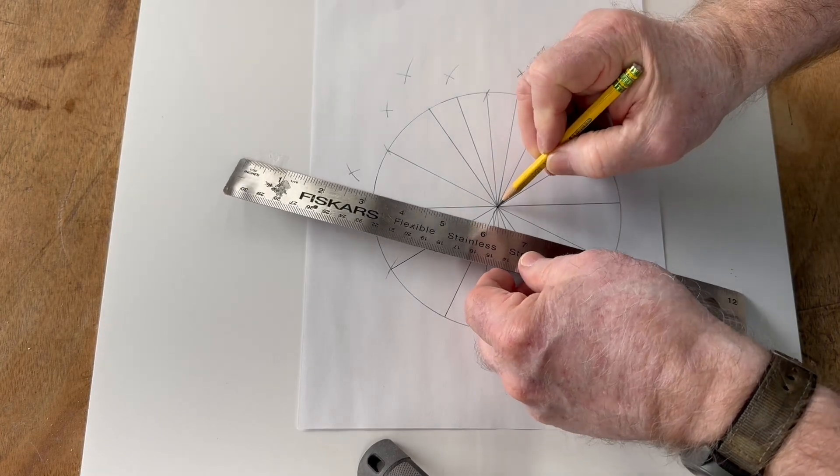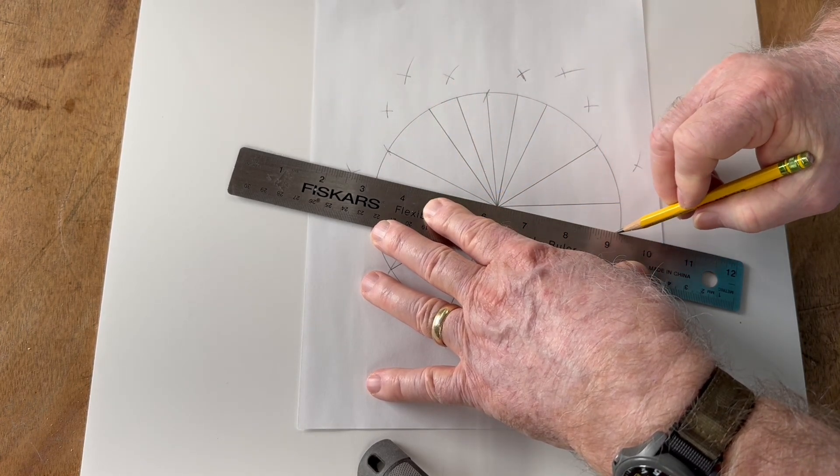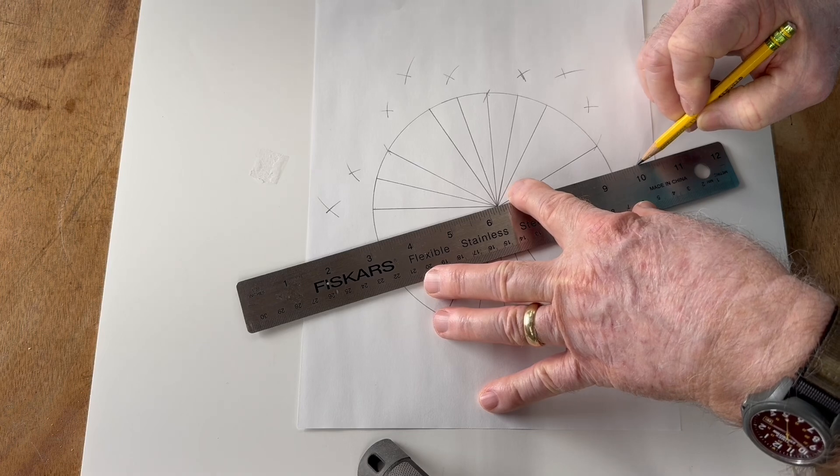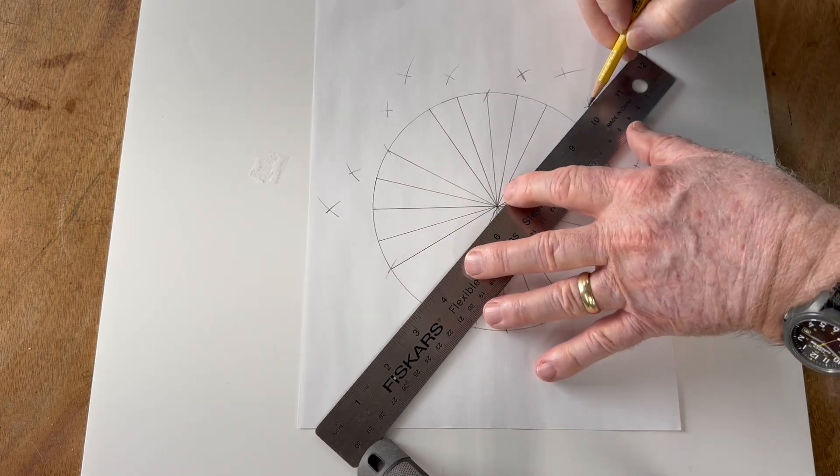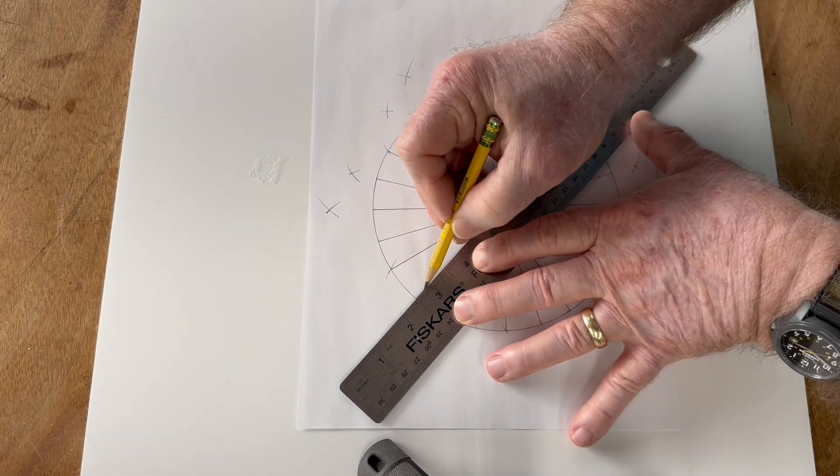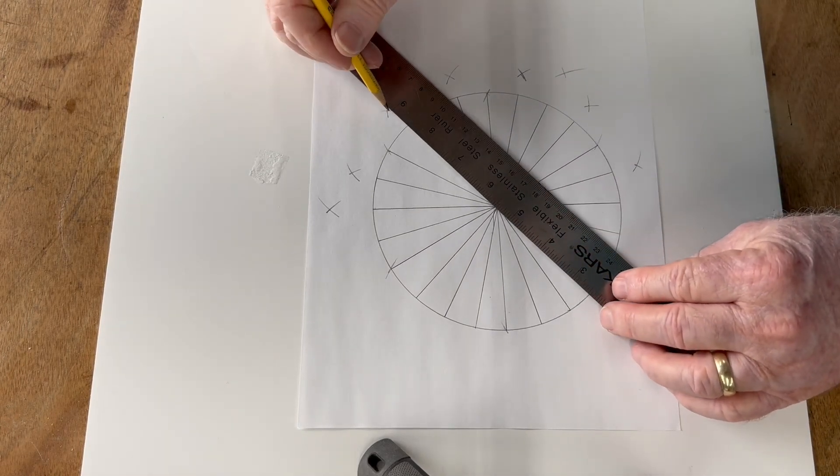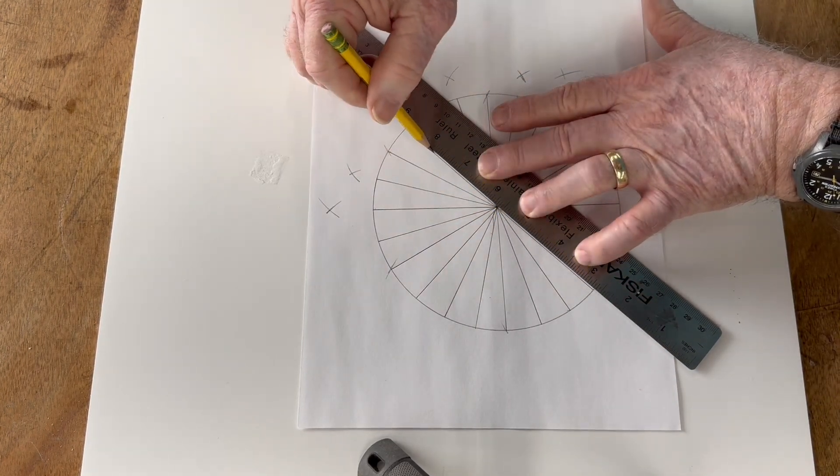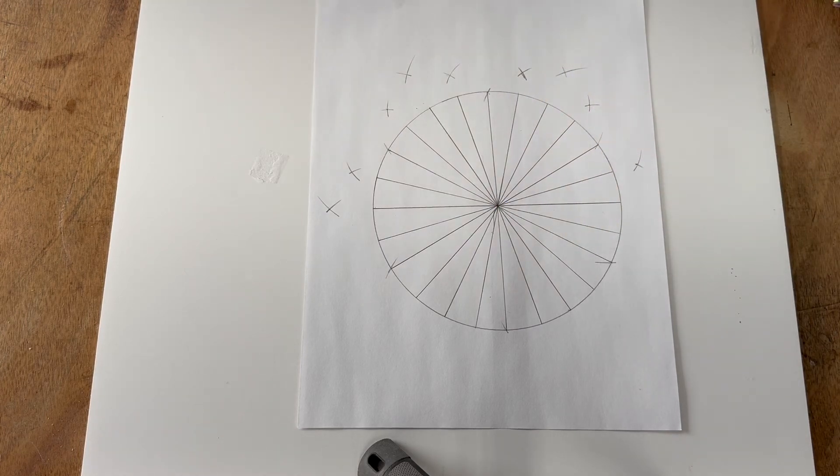Now all we need to do is go from the center point to the arc that we had made. That bisects that section and will create my 24 points. Put my pencil down right there first. Line that up, bring it over to the center of the circle, and draw my line. I have one remaining. Put my pencil down right there on the point, go to the center. Now I have a circle that's divided into 24 equal sections.